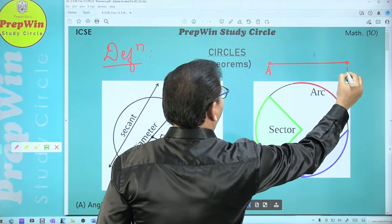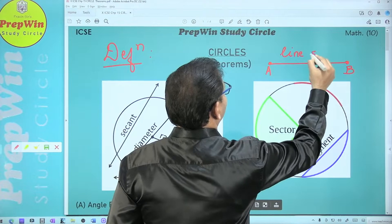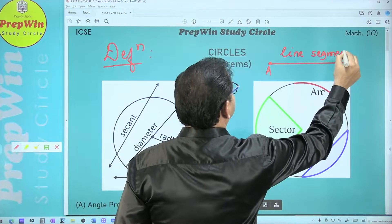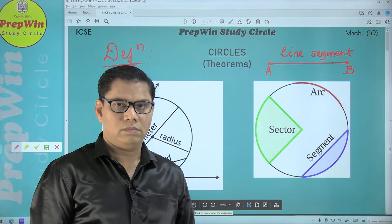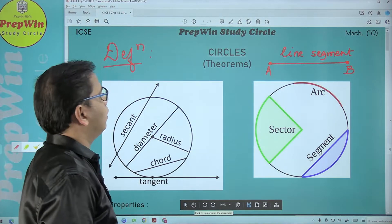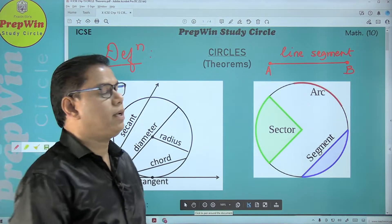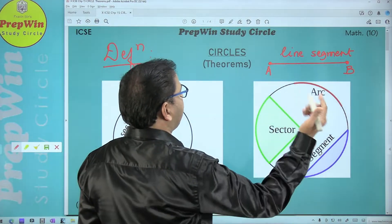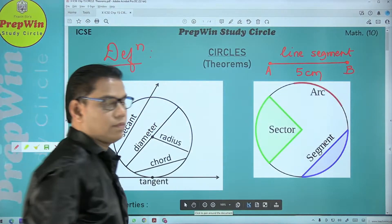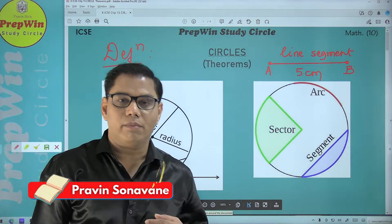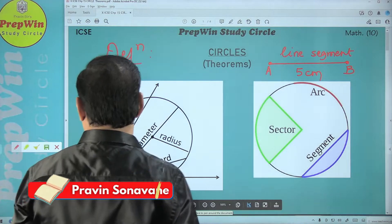This is point A and point B — what is this called? This is called a line segment. Do you know what is the difference between a line segment and a segment? A line segment is a one-dimensional figure. One dimension means we can represent it with one unit — say, the length of segment AB is five centimeters. But a segment is a two-dimensional figure. We will talk about that later.